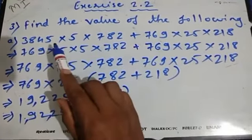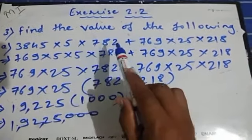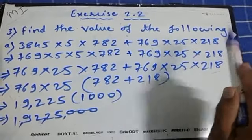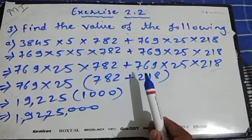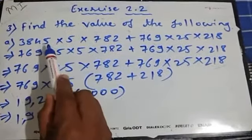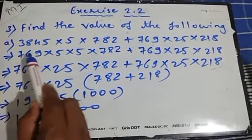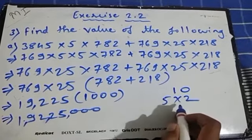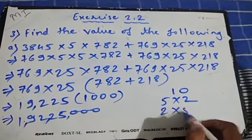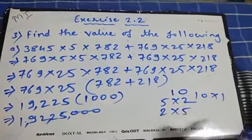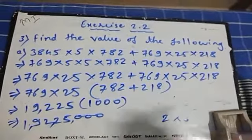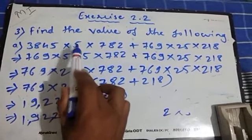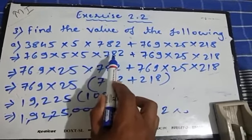Now see the next question: find the value of 3845 × 5 × 782 + 769 × 25 × 218. A slightly different technique is needed here. We are going to write 3845 as 769 × 5. Just as 10 can be written as 5 × 2, we can rewrite numbers in equivalent forms. So 3845 is written as 769 × 5.